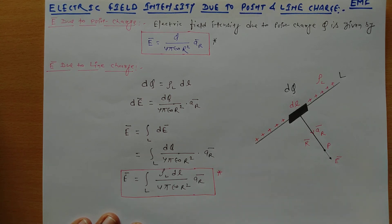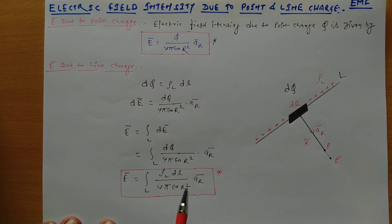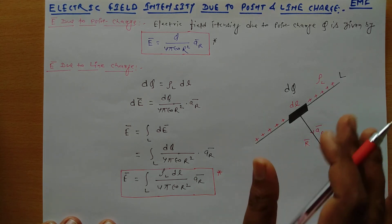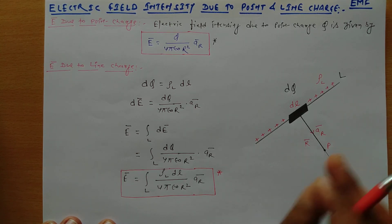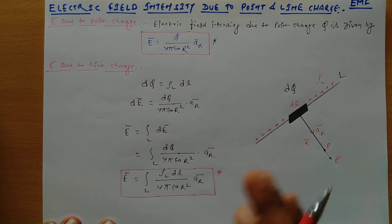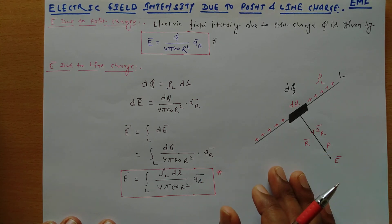This expression is very important for numerical aspects. One more thing — the unit vector ar and the differential length DL are mostly depending upon the coordinate system being used to find the electric field intensity. So if we use a Cartesian, cylindrical, or spherical coordinate system, the values of ar and DL will change accordingly, and we put those values here.